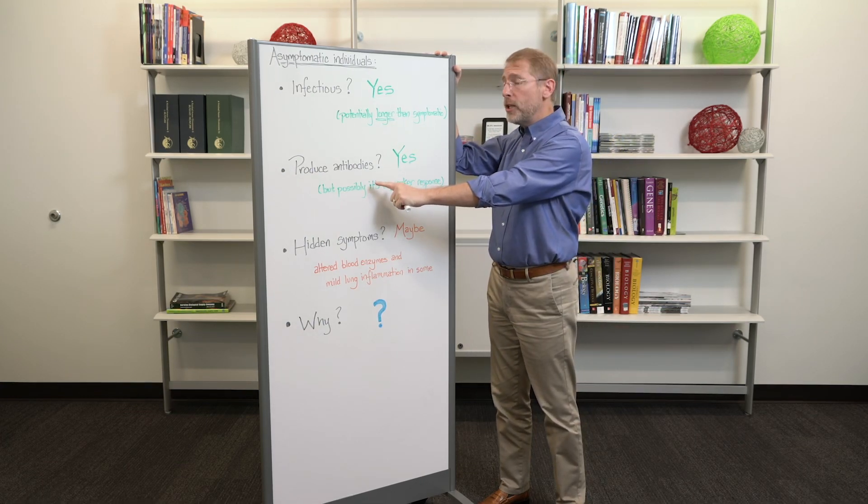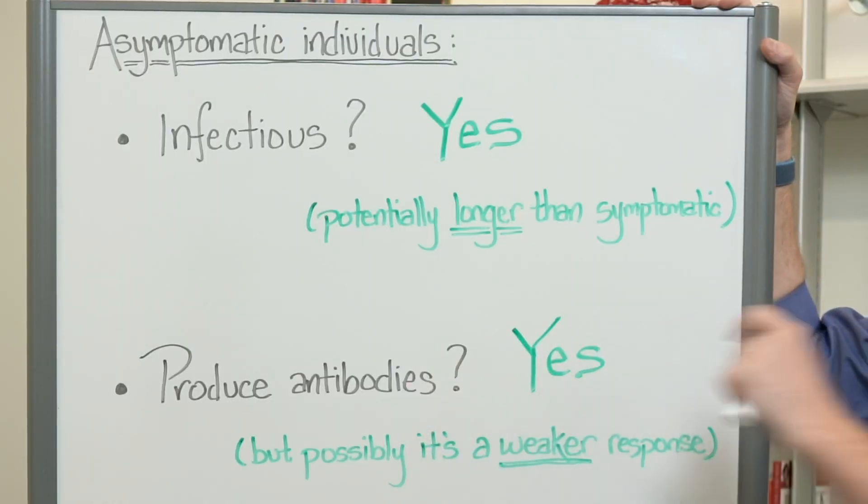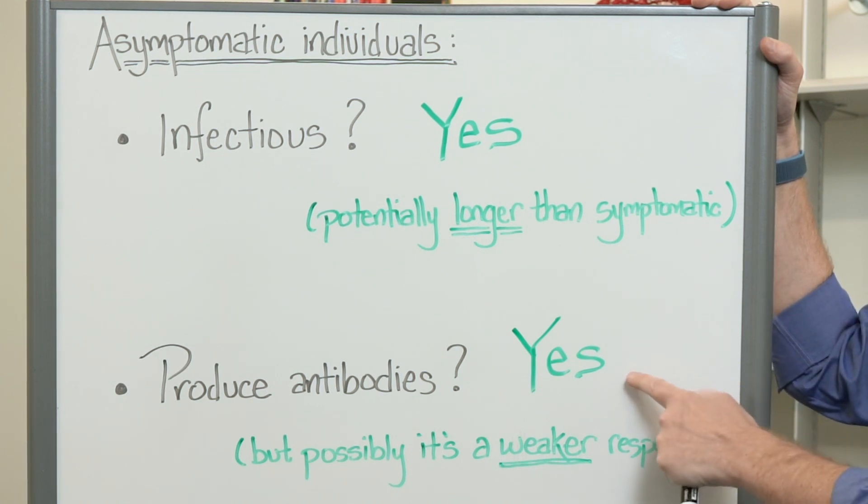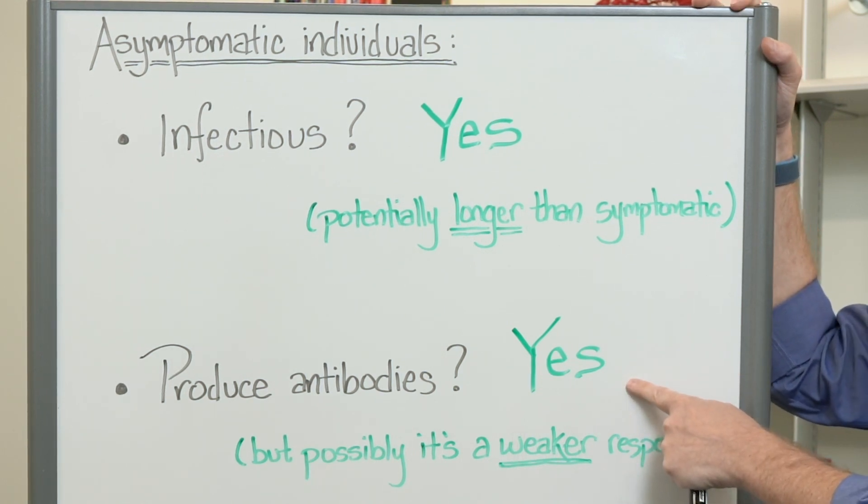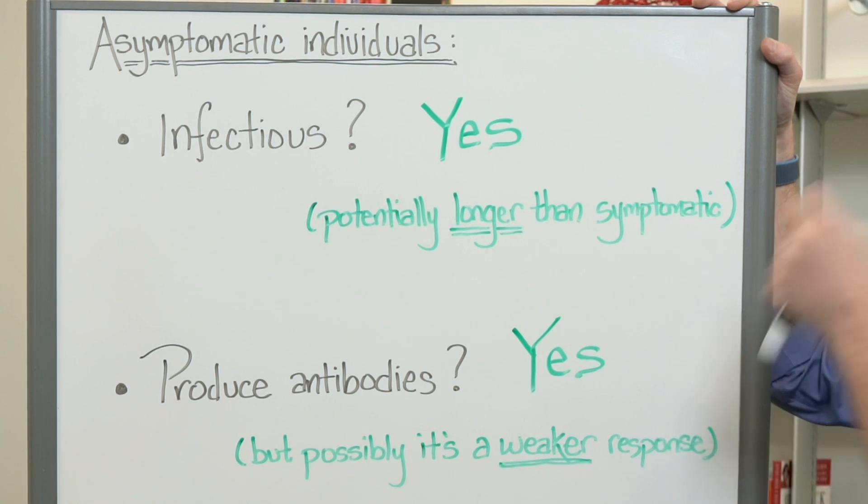Okay, do asymptomatic individuals produce antibodies? Is there an immune response? Would they be protected from a future reinfection? Yes, they are producing antibodies and they seem to be producing the antibodies that we want them to produce, the neutralizing antibodies.